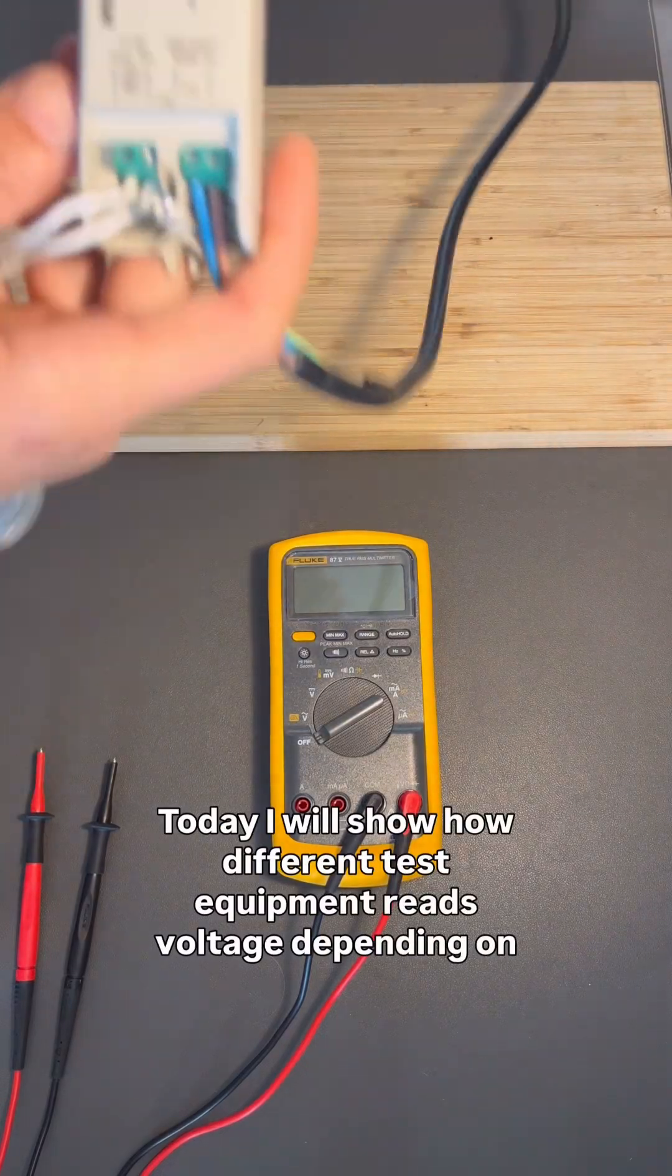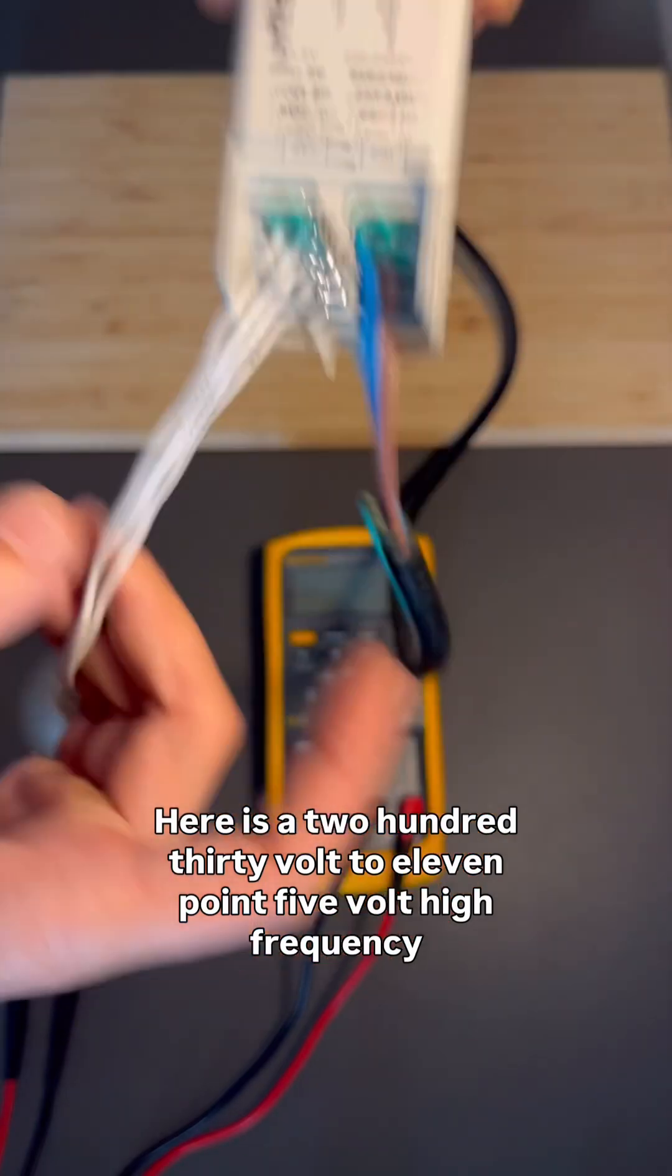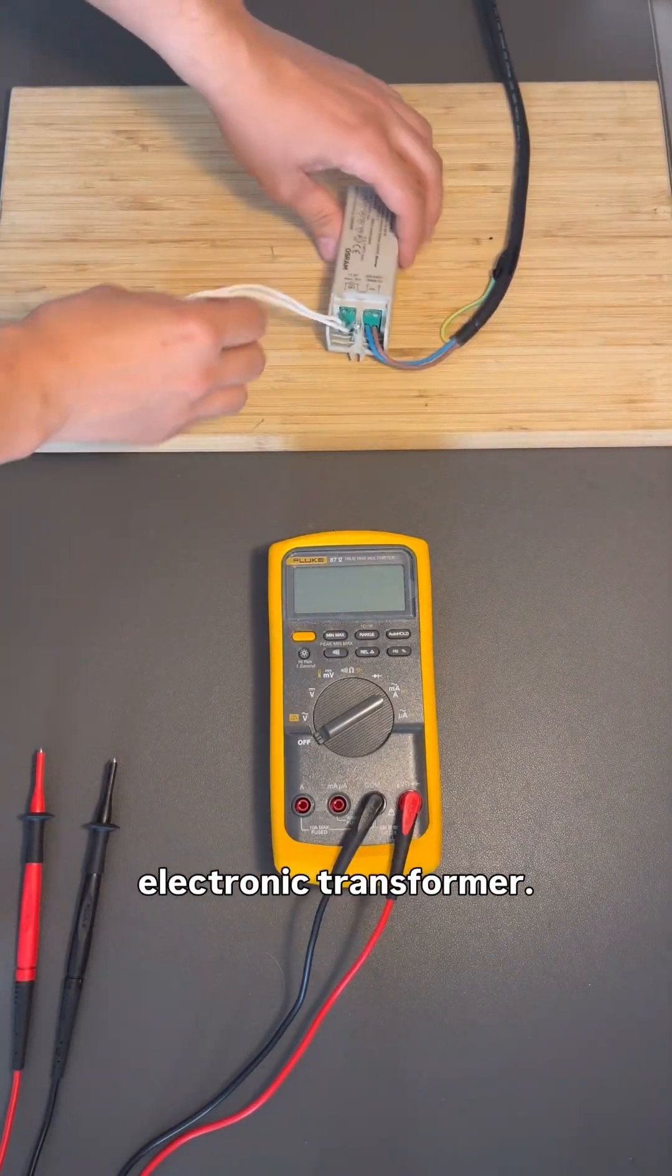Today, I will show how different test equipment reads voltage depending on their bandwidth. Here is a 230V to 11.5V high-frequency electronic transformer.